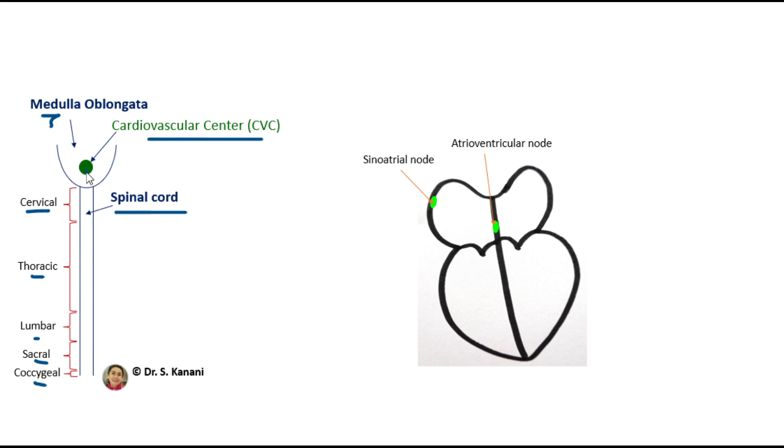When we are going through a fight or flight or emergency situation, signals from the neurons in the cardiovascular center would be sent through cardiac accelerator nerves toward the heart.